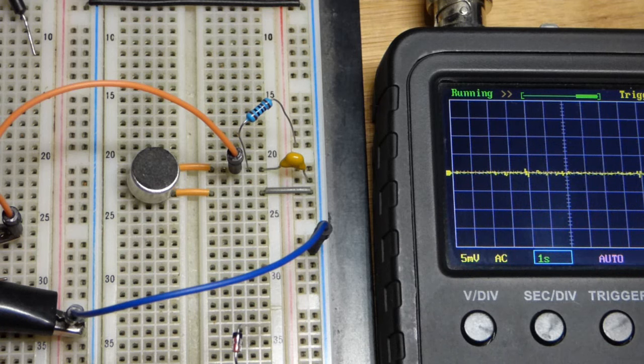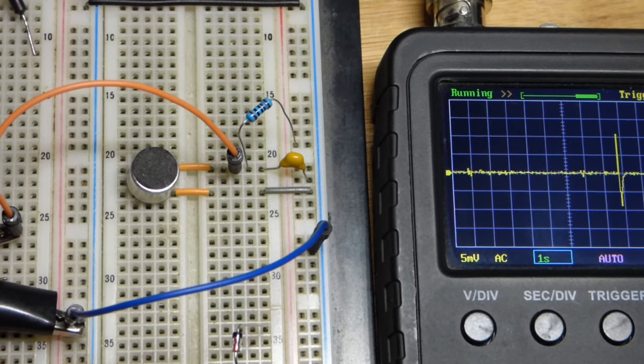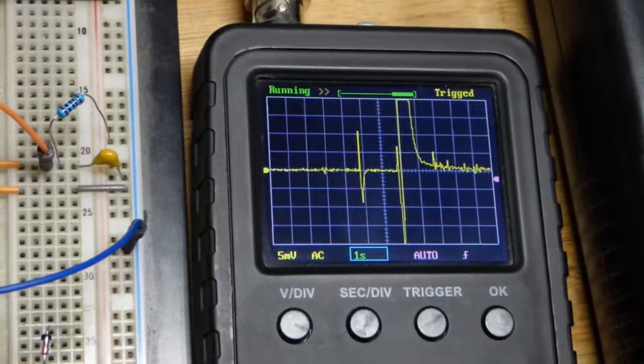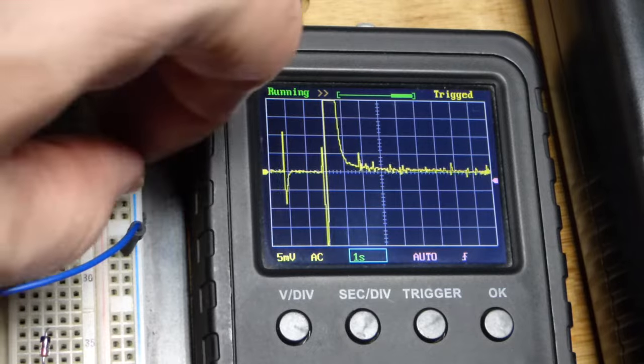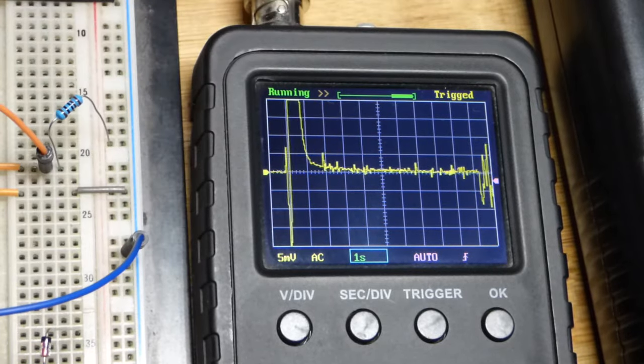And the power supply turned off for some reason. We just have erratic waveforms without the capacitor, so now power's on. I don't know why it keeps turning off. But there we go.